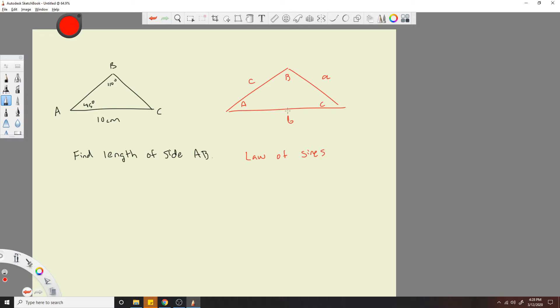And it says that the length of some side, any of these sides over its opposite angle will be equal to any other of the same kind of thing. So B over sine of B equals C over sine C. So the side over its opposite angle is equal to any other side over its opposite angle, if that makes sense.